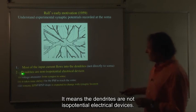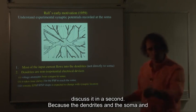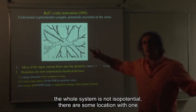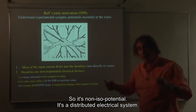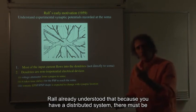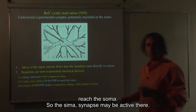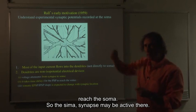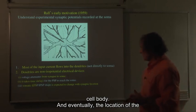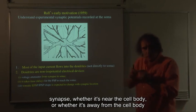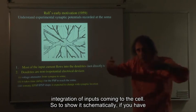What does it mean? It means the dendrites are not isopotential electrical devices. Voltage must attenuate from the synapse to the soma. Because the dendrites, soma, and the whole system is not isopotential, there are locations with different potentials — it is a distributed electrical system. Rahl already understood that because you have a distributed system, there must be delay: it will take time for a signal from a synapse to reach the soma. And eventually, the location of the synapse — whether near or away from the cell body — must have some effect on the overall integration of inputs coming to the cell.